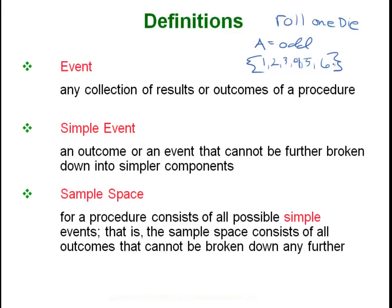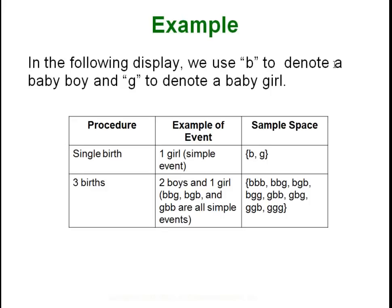That's all vocabulary means. Here's another example. The procedure or experiment is giving birth to one child — a single birth. An example of an event, which in this case is also a simple event, is just having one girl, because you can't break that down into smaller bits and pieces. The sample space for all possible ways you could give birth to one child would be boy or girl. And if we looked at it for three births, a typical example of an event would be two boys and one girl.